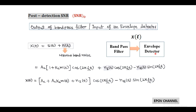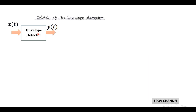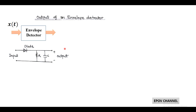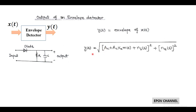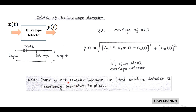Using envelope detection as shown in the figure — which consists of a series diode and RC filter — the output is obtained by taking the envelope of X(t), which is the same as finding its magnitude. So Y(t) = √[(AC + AC·KA·m(t) + NI)² + NQ²]. This Y(t) is considered the output of an ideal envelope detector. Since the ideal envelope detector is insensitive to phase, phase is not considered here.